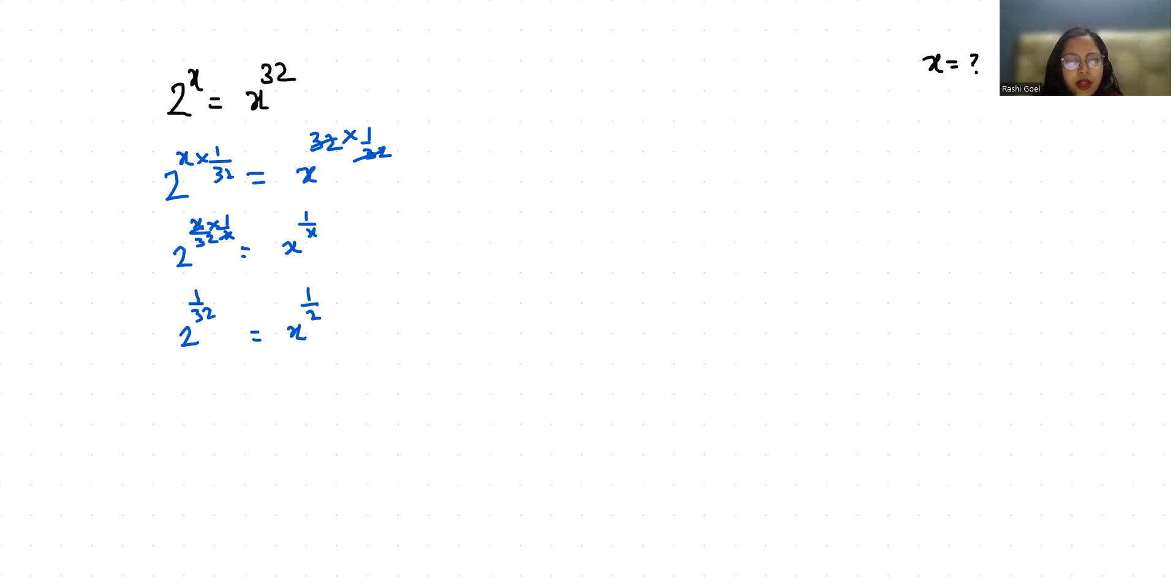Now we know that 1 by 32 equals 2 by 64 if I multiply by 2 in numerator and denominator. And 2 by 64 if I multiply 2 with numerator and denominator it becomes 4 by 128. Similarly 4 by 128, if I multiply both numerator and denominator by 2, becomes 8 by 256.